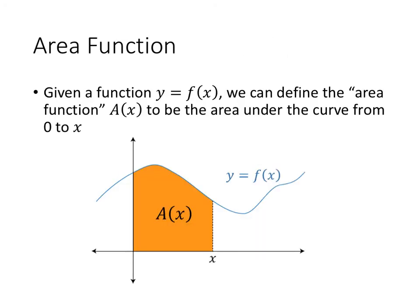So why does that work? Well, one way to think about why that works is to think about an area function. So in this case, we're going to define the area of x, capital A of x, to be the area under the curve y equals f of x from 0 to x. So as x moves back and forth, the area will either increase or decrease based on various properties of the function.